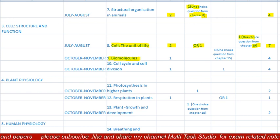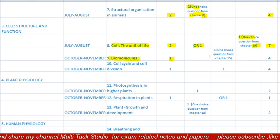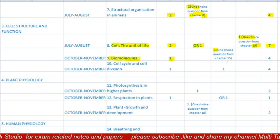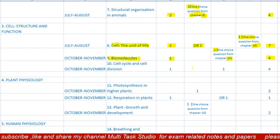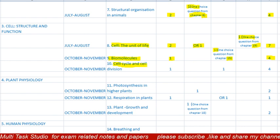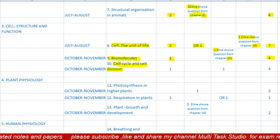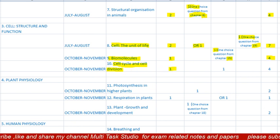The ninth lesson is 'Biomolecules,' syllabus for October/November. There will be one MCQ and one question of three marks, with the choice from lesson 15. Total paper is four marks. The tenth lesson is 'Cell Cycle and Cell Division,' also October/November syllabus. There will be one MCQ of one mark and one question of three marks. Total paper is four marks.